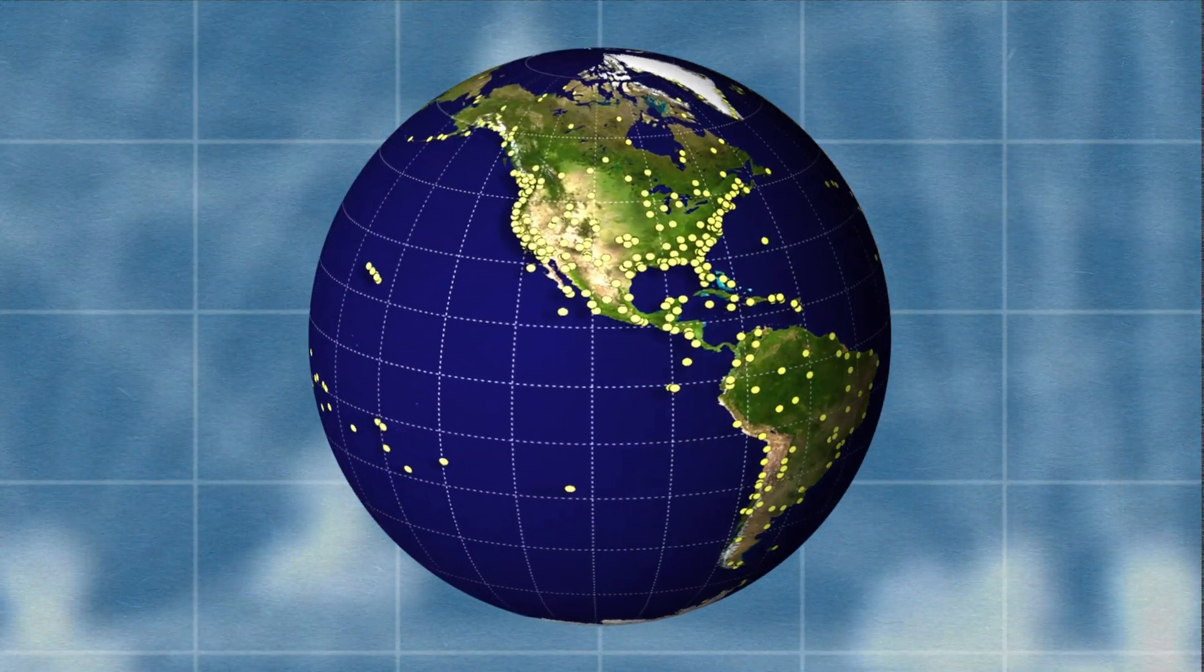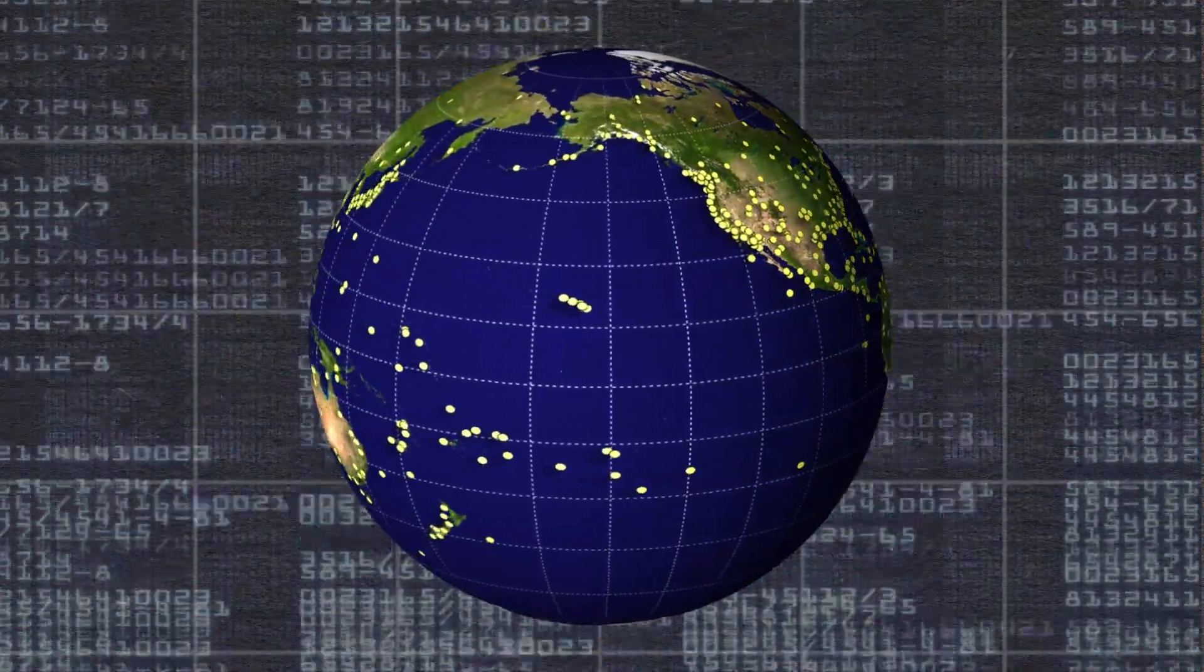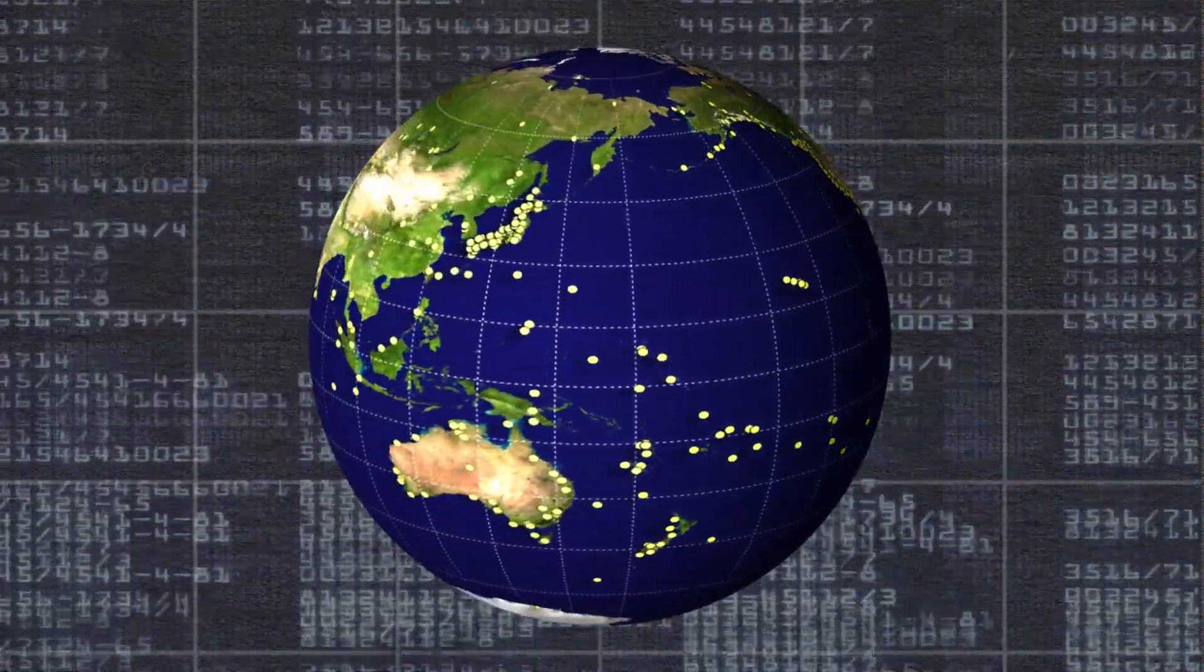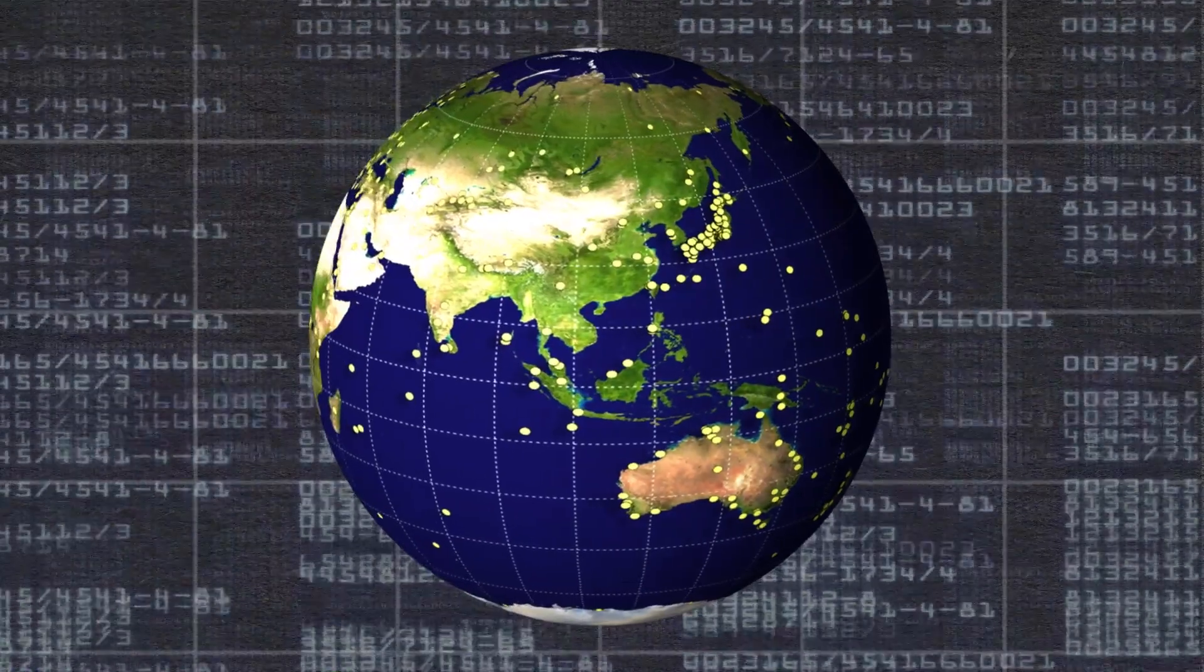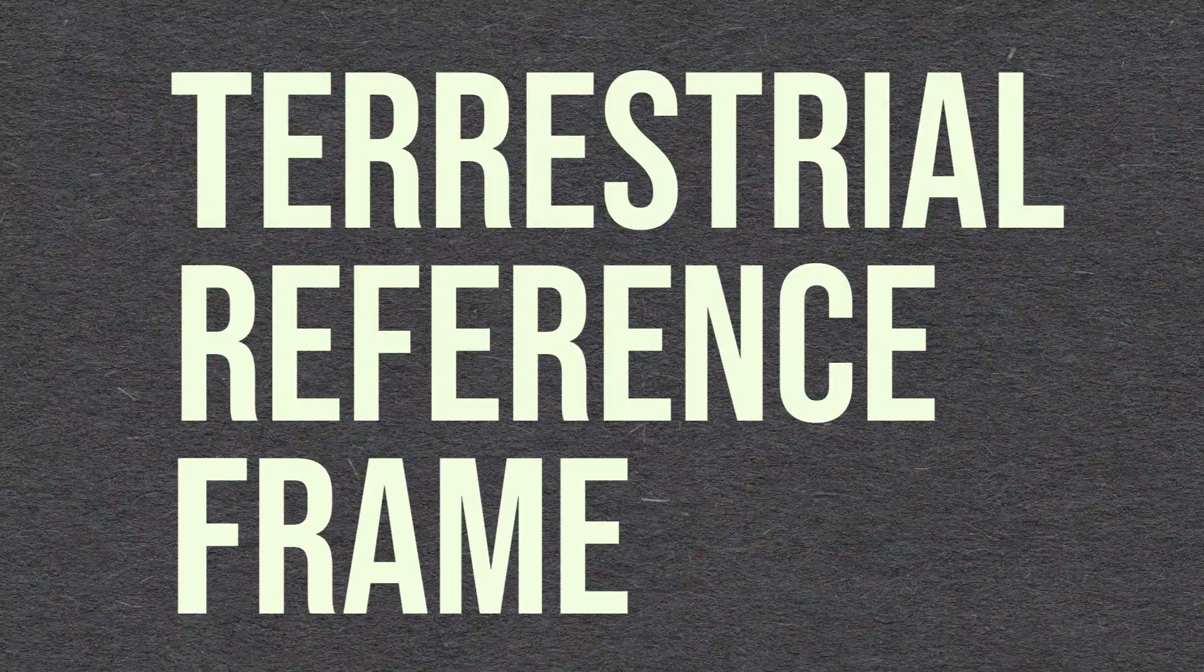But what you might not know is that behind your favorite navigation app is an invisible infrastructure of systems working together to provide you an accurate location. And at the foundation of these systems is a TRF or terrestrial reference frame.